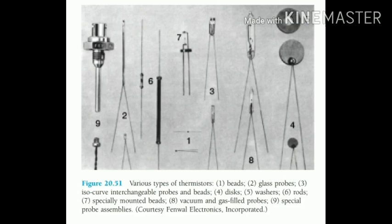The thermistors are two terminal devices. All thermistors have two terminals. There are various types of thermistors: first is bead; second is glass probes; third is isocurve interchangeable probes and beads; fourth is disc; fifth is washers; sixth is rods; seventh is specially mounted beads; eighth is vacuum and gas filled probes; ninth is special probe assemblies. In this way, various types of thermistors are possible, but one thing to remember is they are two terminal devices.